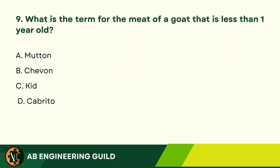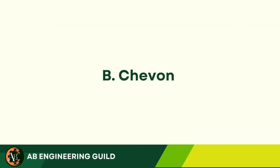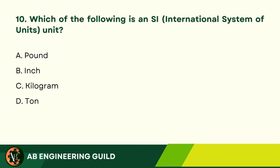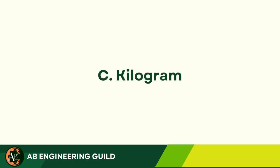Question 9. What is the term for meat of a goat that is less than one year old? A. Mutton. B. Shevin. C. Kid. D. Cabrito. Answer: B. Shevin. Question 10. Which of the following is an SI, International System of Units, unit? A. Pound. B. Inch. C. Kilogram. D. Ton. Answer: C. Kilogram.